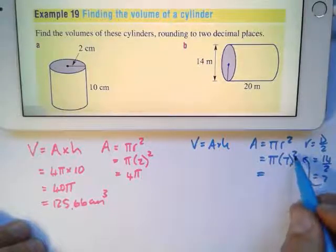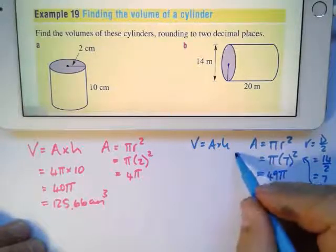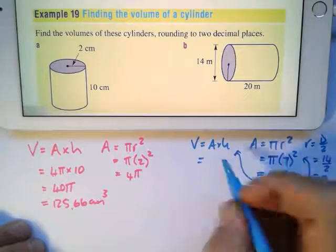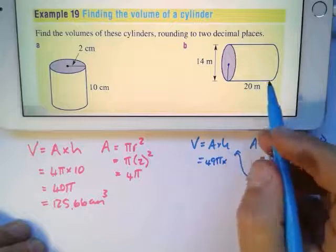I'm now going to substitute that in there. My area is 49π times my height, which is 20.